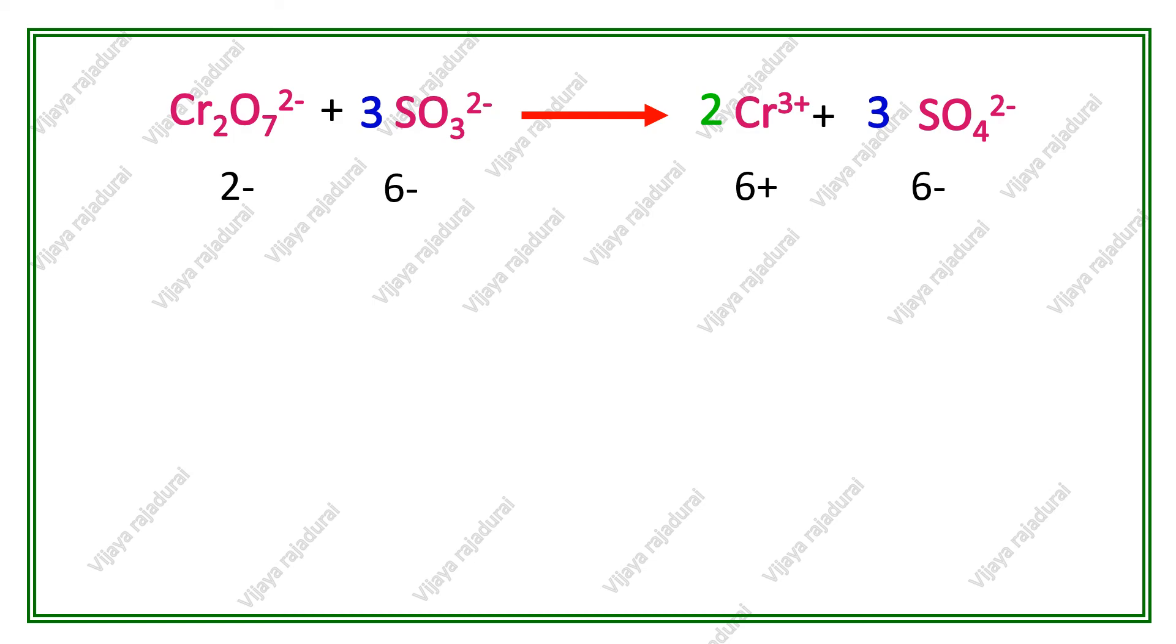Overall, charges on reactant side are -8. Product side is +6 -6 which produces 0.